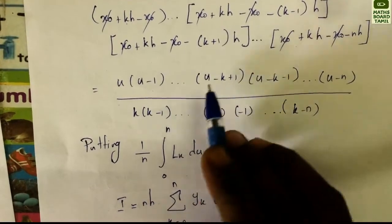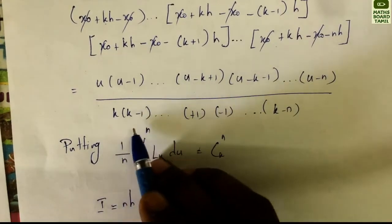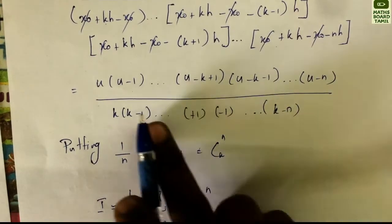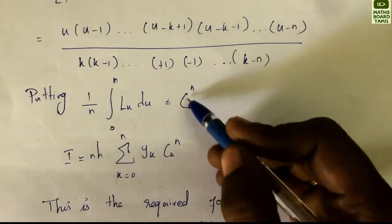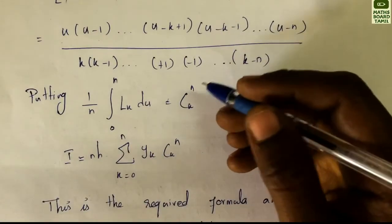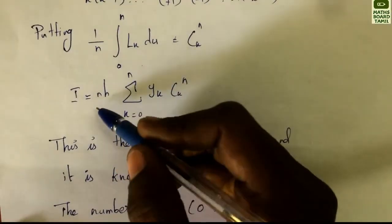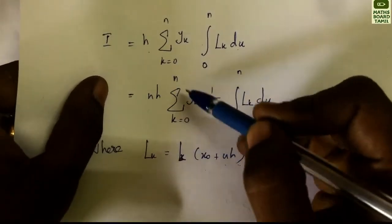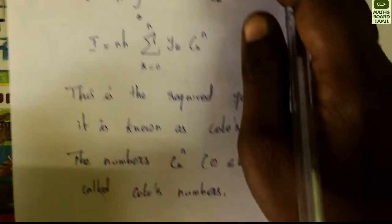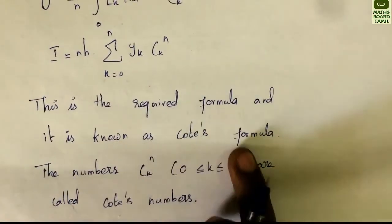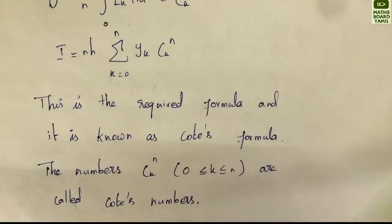We get u(u−1)···(u−k+1)(u−k−1)···(u−n) divided by k(k−1)···1·(−1)···(k−n). All h terms cancel. So the integral from 0 to n of lk du gives the value Ckn. Substituting, I = nh times summation k = 0 to n of Ckn · yk. This is the required Cotes formula.